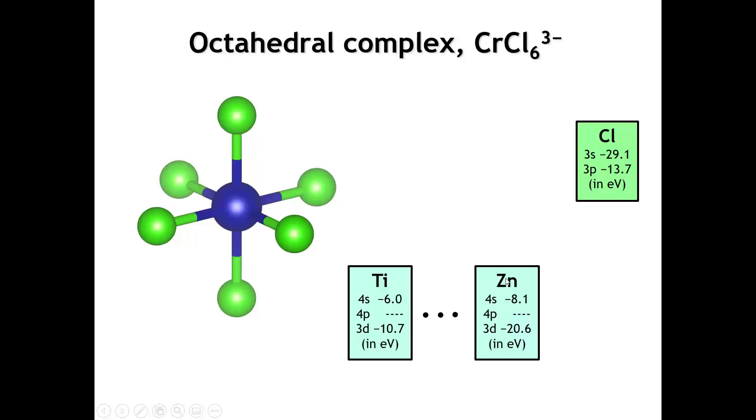This is going to allow us to simplify things. Let's treat the 3s orbitals on chlorine like core orbitals. So now we only have to deal with the 3p orbitals. There's three of those per chlorine, six chlorines in this molecule, so that's 18 chlorine 3p atomic orbitals. For the central chromium, we're going to include all nine valence orbitals: five d orbitals, one s orbital, and three p orbitals.